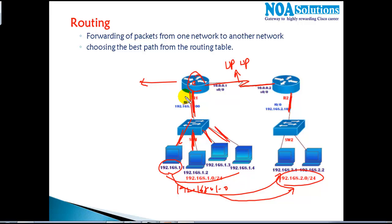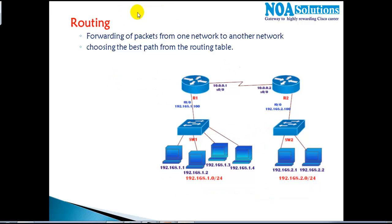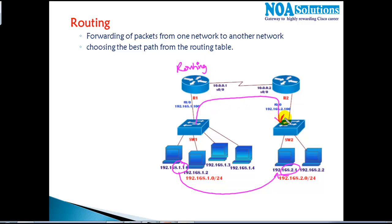There is one more thing we need to configure, something called routing. We need to ensure we configure routing on this router in order to forward the packet from one network to another network. Routing is a process of establishing communication between two or more different networks — it can be in the same location or on different locations.